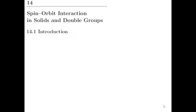Welcome to lecture 14.1, the first lecture of chapter 14 of our group theory course. Today and in the following chapters we are going to discuss the effects of group theory when you consider spin of the electron and spin-orbit interaction. As we'll see, this will give rise to the concept of double groups. I will assume you have seen the fundamentals of spin-orbit interaction in quantum mechanics, atomic physics, or solid state physics courses.